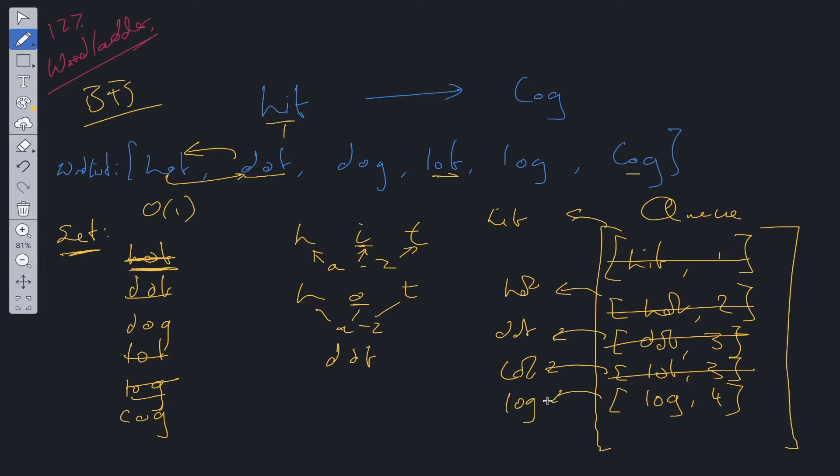Now we can shift off of queue. Can log be updated? Well it can be updated to dog and cog. So we add those two to the queue and we remove them from the set.